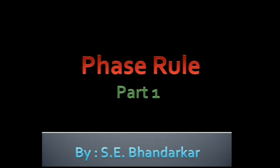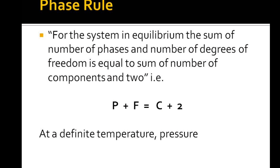Welcome to part 1 of phase rule. In this part we are going to discuss various terms involved in phase rule. For a system in equilibrium, the sum of number of phases and number of degrees of freedom is equal to the sum of number of components and 2. Mathematically, P plus F is equal to C plus 2, which is the phase rule.